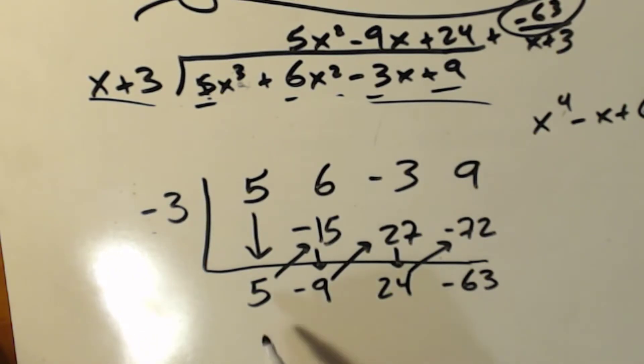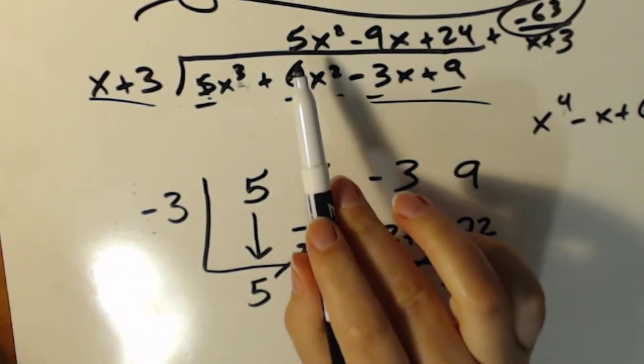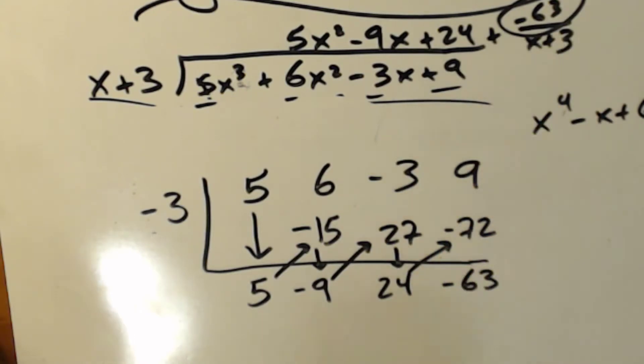So we're going to go up to there. And then 9 plus negative 72 is going to be negative 63. So you'll notice that all of these numbers are these numbers. How cool is that? And all we had to do was a little bit of multiplying and a little bit of adding, and that's it. And we're done. I mean, we're not done. We're almost done.